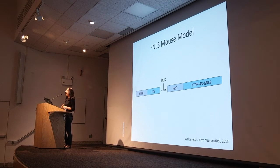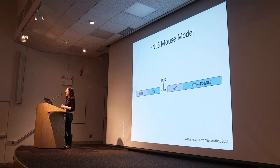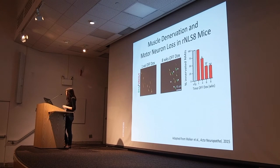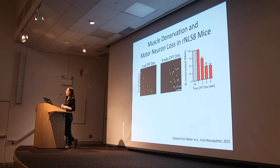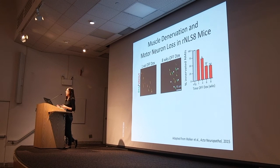We found that chronic expression of the transgene resulted in widespread neuronal cytoplasmic TDP43 inclusions. We also found significant muscle denervation between one week off and eight weeks off dox, signaled by the lack of co-localization between alpha-bungarotoxin in green, which labels the motor end plates on the muscle, and vesicular acetylcholine transporter in red, which labels the nerve terminal.